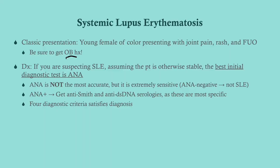Make sure to get an OB history in every female you're suspecting of SLE, because a history of miscarriages is suspicious for antiphospholipid syndrome, which often coincides with SLE. If you're suspecting SLE, the best initial diagnostic test is an ANA. ANA is kind of a screening test for a lot of these autoantibodies — if the ANA comes back negative, it's almost certainly not lupus.